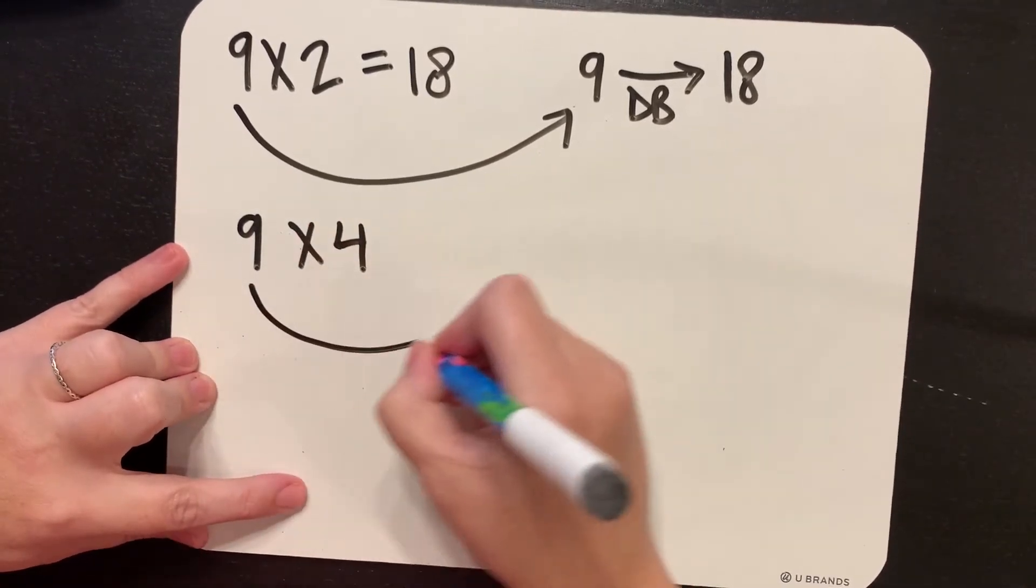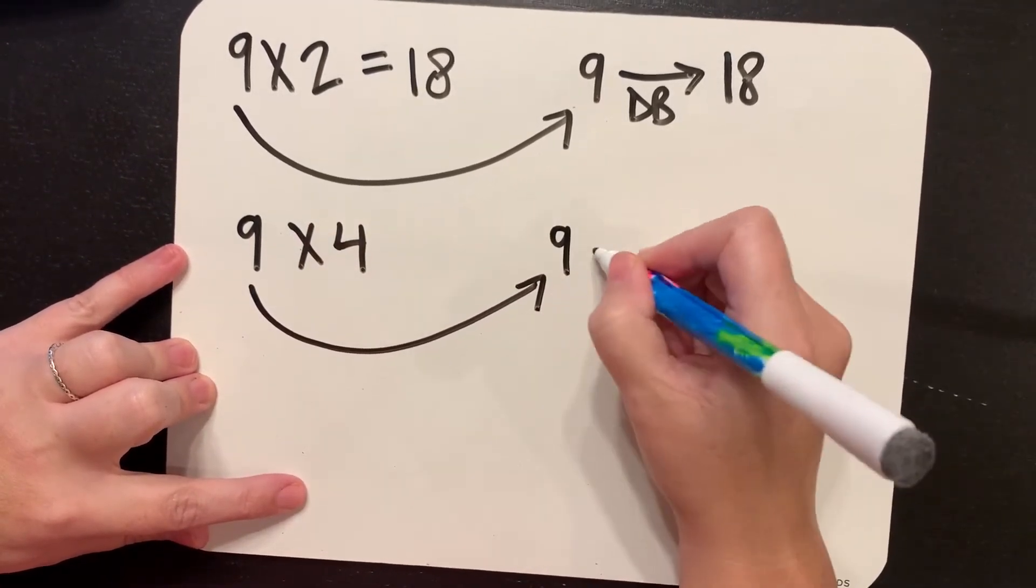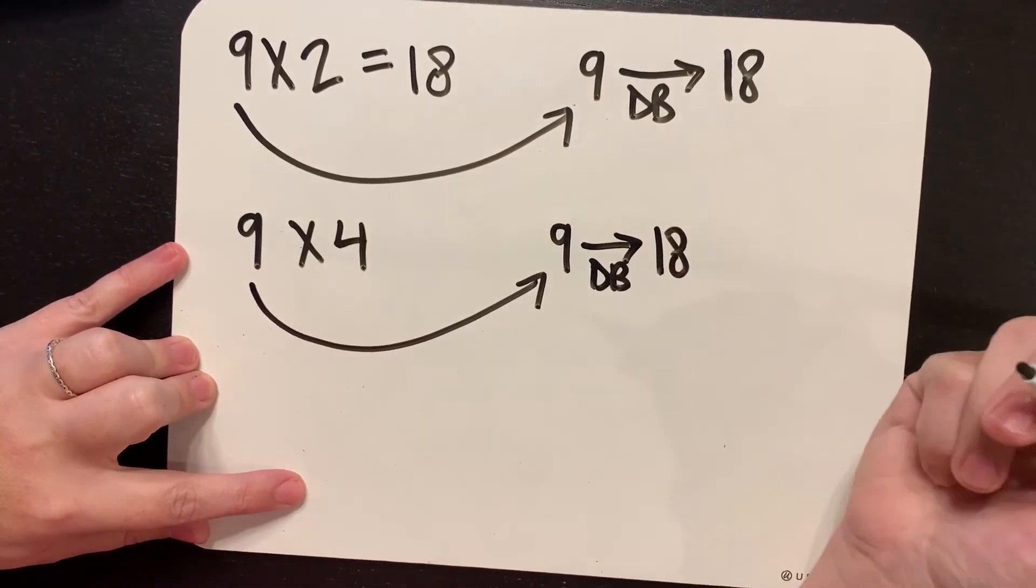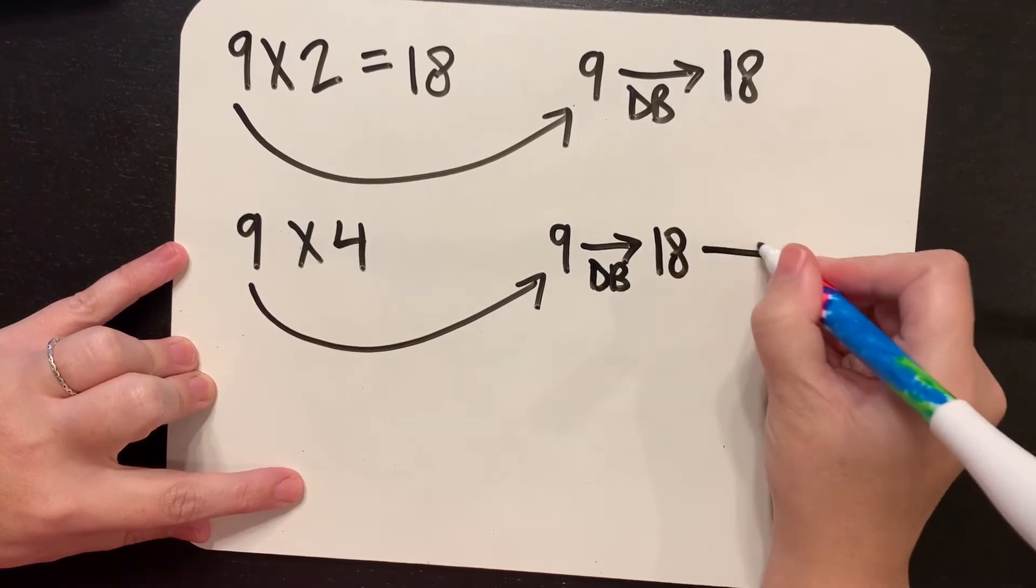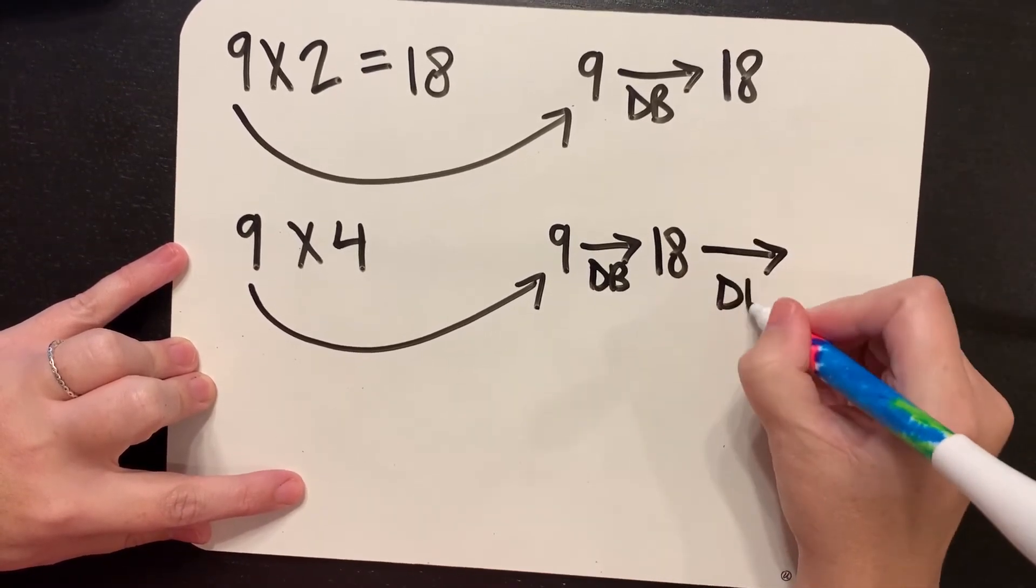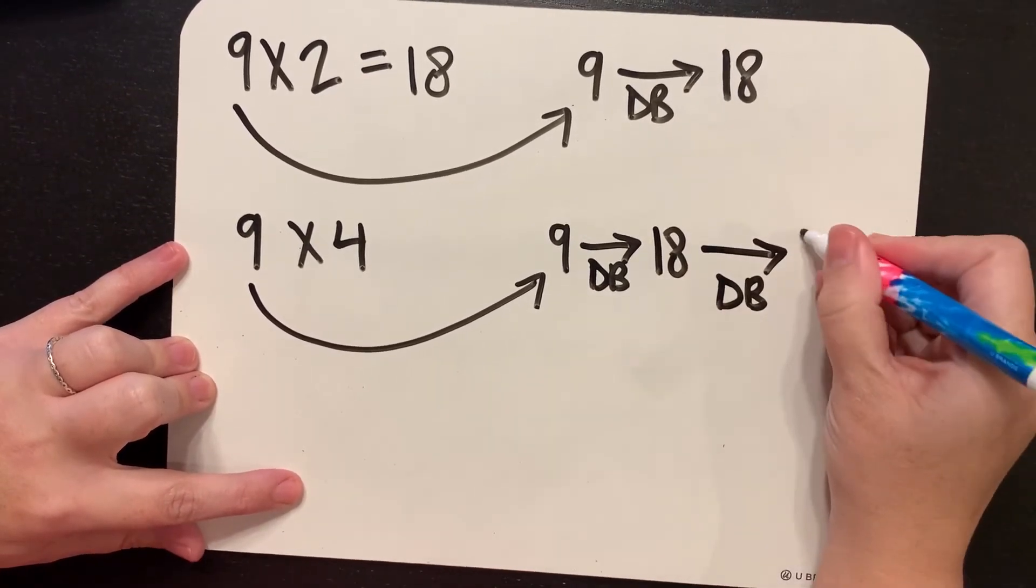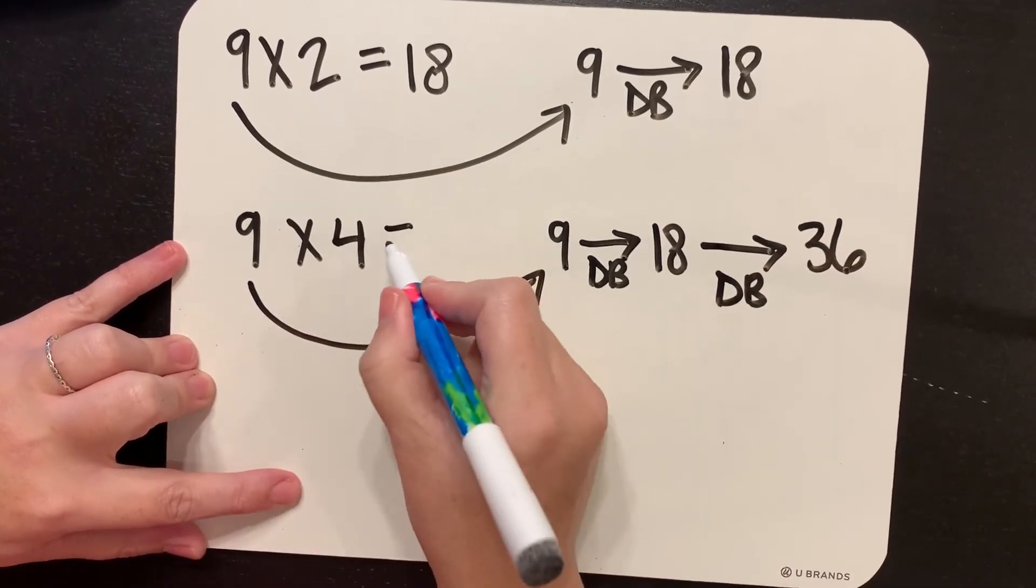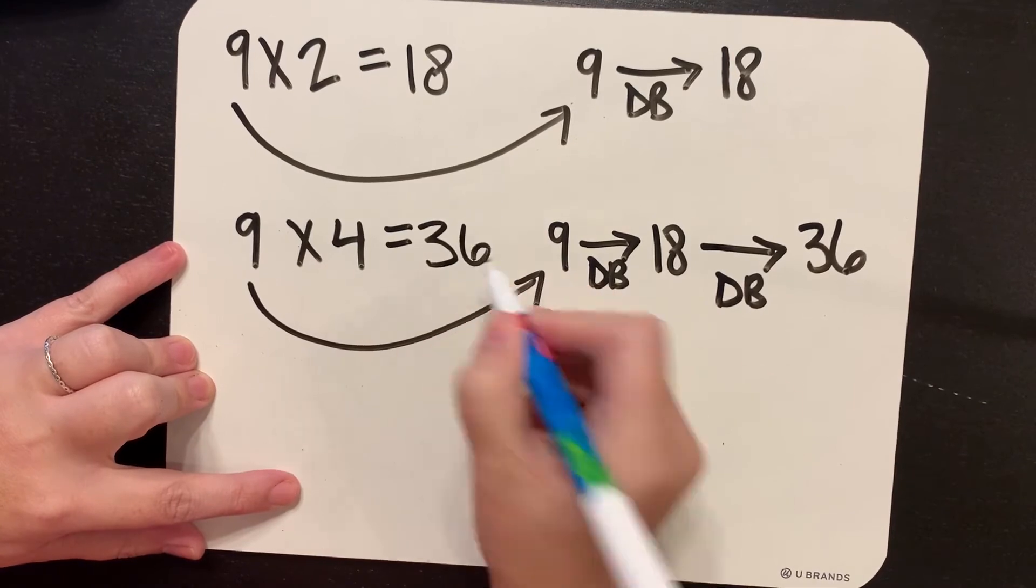Let's take our 9. We're going to double it once to get 18, and then we're going to take that and double it to get 36. And 9 times 4 equals 36.